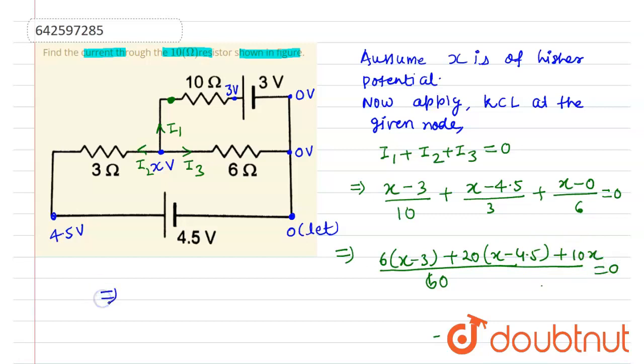After calculation, this will be equals to 6x minus 18 plus 20x minus 90 plus 10x equals to 0. This will be 36x equals to 108, so x will be equals to 3 volt.